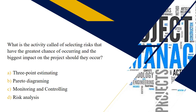What is the activity called of selecting those risks that have the greatest chance of occurring and the biggest impact on the project should they occur? Hopefully you chose choice D — risk analysis — because it is the process of figuring out what risks might happen and what the results would be if that risk did occur.